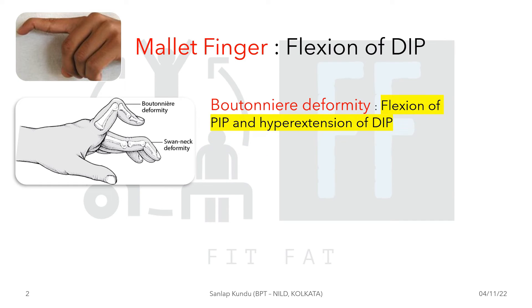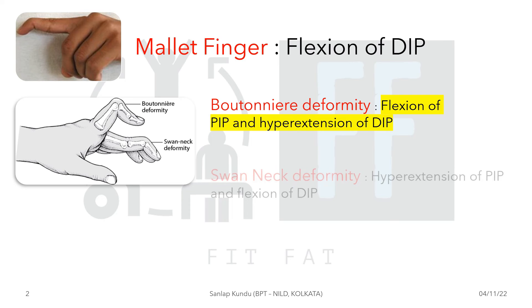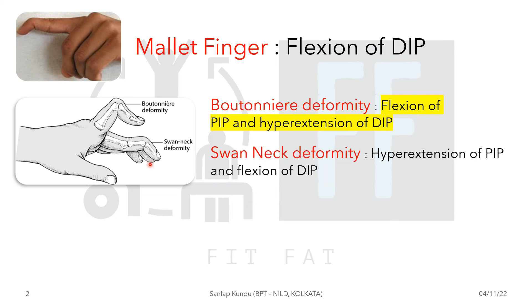First is the boutonière deformity, which is flexion of the PIP joint and hyperextension of the DIP joint. The DIP joint is hyperextended and the PIP joint is flexed.